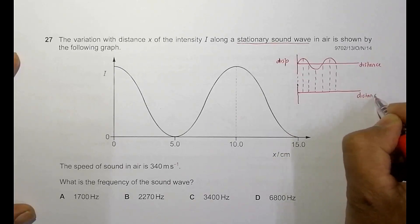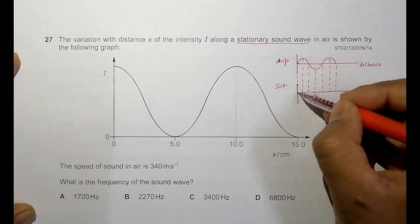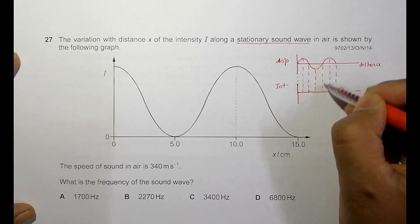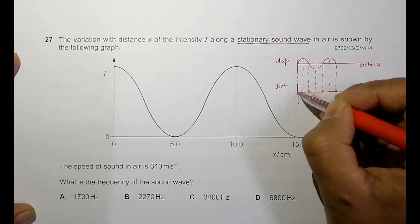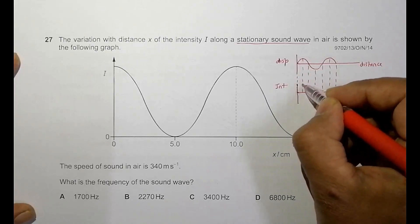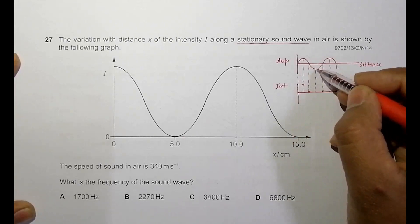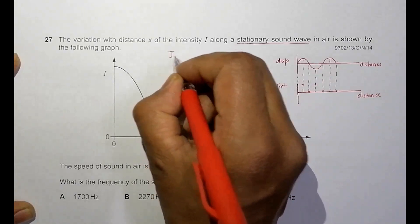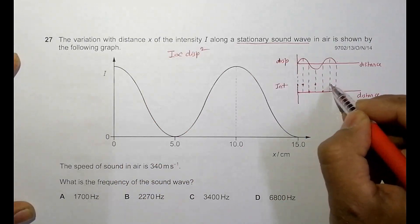When the displacement is 0, the intensity is 0. At those zero-displacement points, intensity is 0. At maximum displacement, the intensity is maximum. At maximum negative displacement, the intensity is again maximum — because intensity is proportional to displacement squared. So at zero displacement intensity is minimum, and at maximum displacement intensity is maximum.